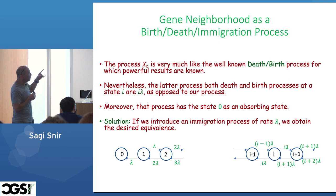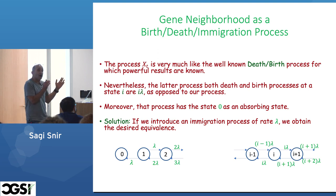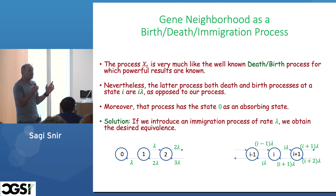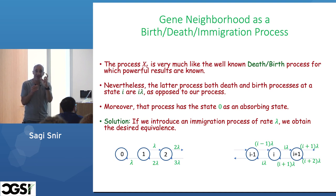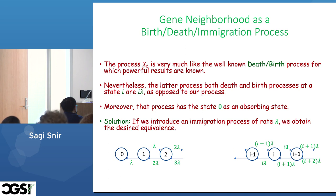X_T is a random process describing the distance between G_L and G_L'. It can be seen that X_T is quite similar to a birth-death process, where the population here is the genes, and the distance either grows or shrinks. However, there is a dissimilarity: there is no absorbing state — you cannot go to zero distance as an absorbing state, because there is always HGT between them.